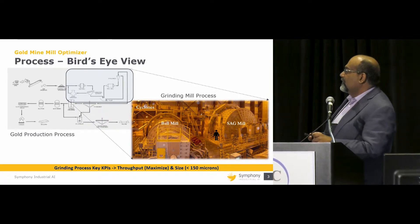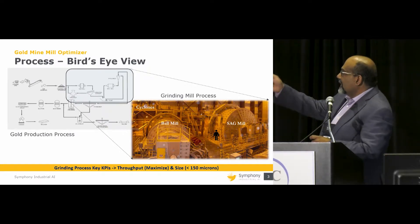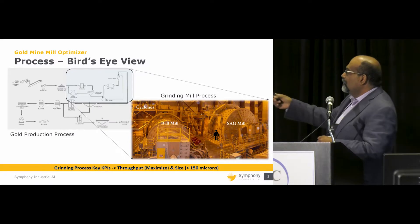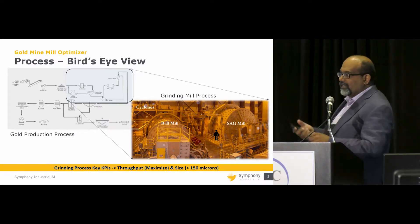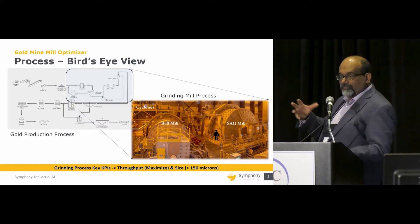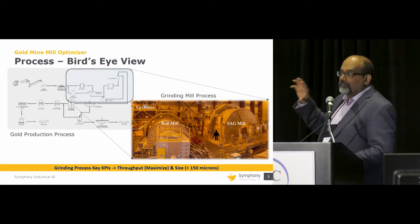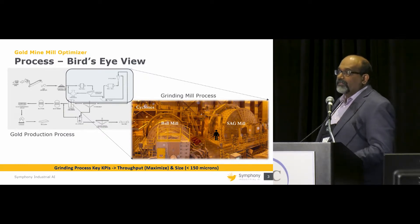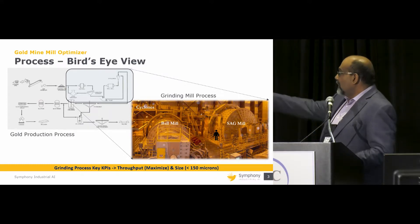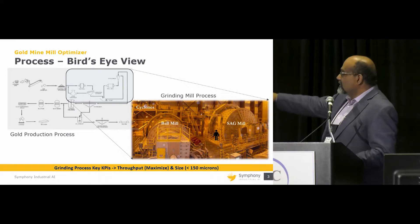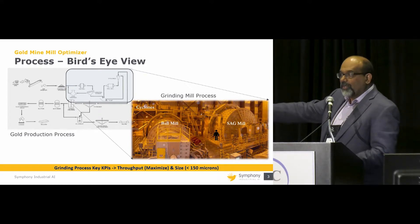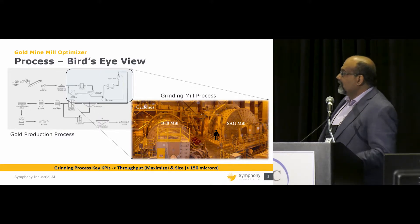These are open pit mines. You bring in the ore, crush it, create a pile, and then there is a grinding circuit. The grinding circuit has two big operations: a SAG mill and a ball mill. The SAG mill has large metal balls and it rotates — a combination of the balls crushing against the ore and gravity crushes it from about eight to nine inches in diameter all the way to 150 microns through these two steps. Then the ore is taken into the ball mill, where it is purely crushed by the balls rotating.